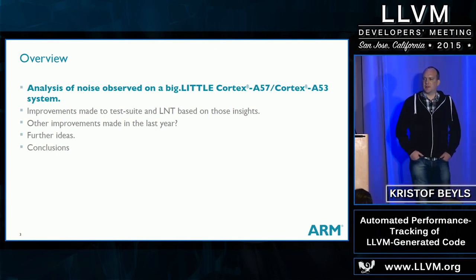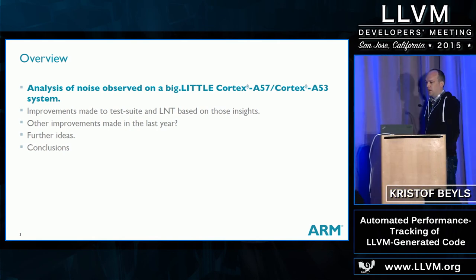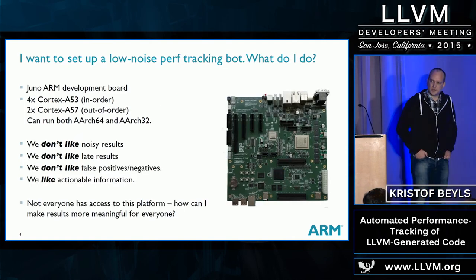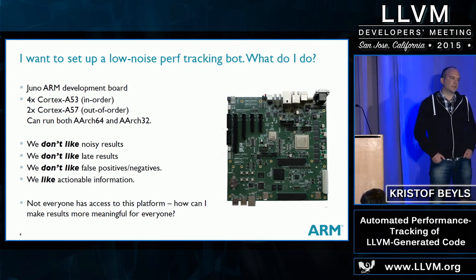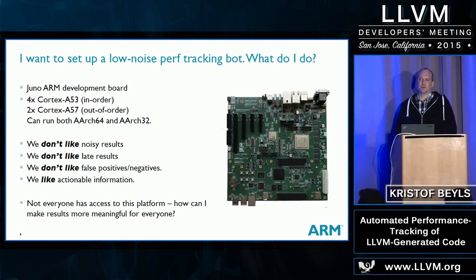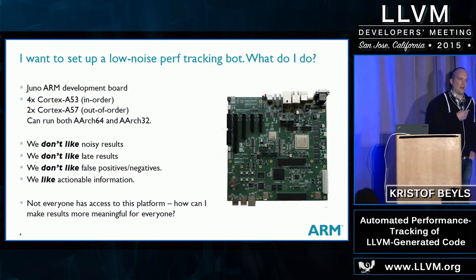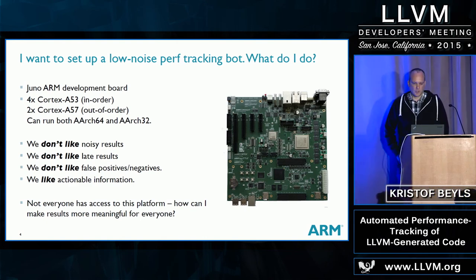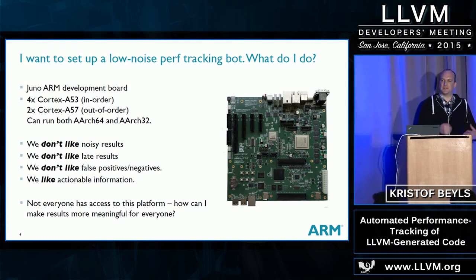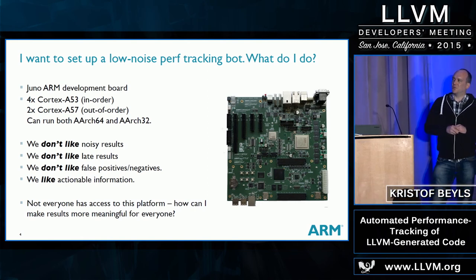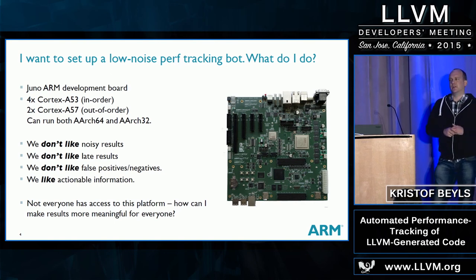I also wanted to do something hands-on to understand the problem a bit better. Half a year ago I got my hands on an ARM Juno board. It contains an SoC with a couple of Cortex-A53 cores and a couple of Cortex-A57 cores. One of the nice things is that it combines both in-order and out-of-order cores, so I have results for both microarchitecture types.